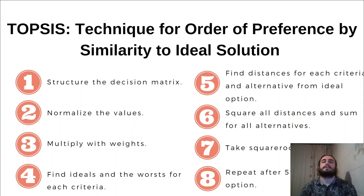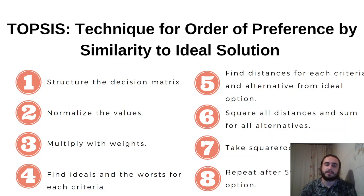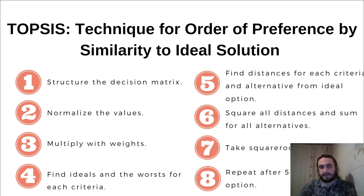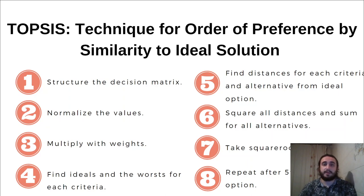Now we can use our criteria weights in further methods. The first one is TOPSIS. We should structure the decision matrix. After we have that, we should normalize the values because, for example, price has values like 1000 or 2000 and delivery time has values like 20 or 40 hours — those numbers are very different, so we should normalize the matrix.